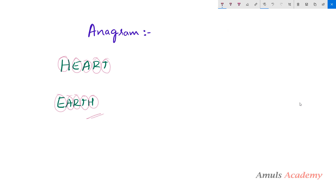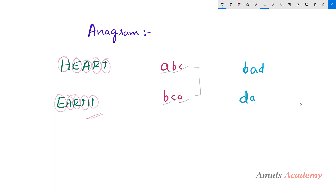Let's take another example. The string 'abc' contains a, b, c and 'bca' contains b, c, a — so these two are anagram strings, because both contain the same characters a, b, and c.